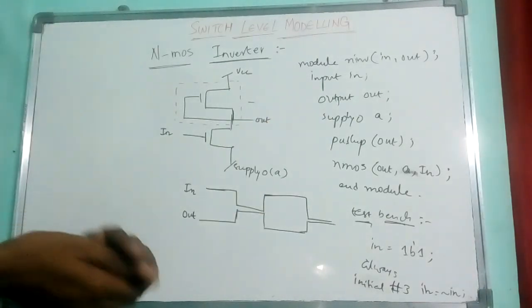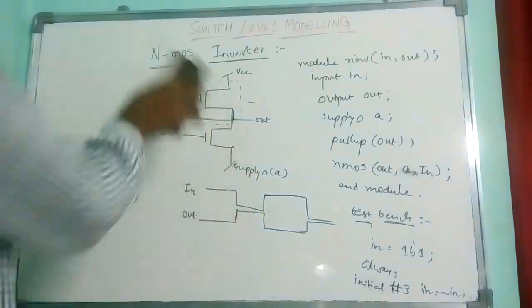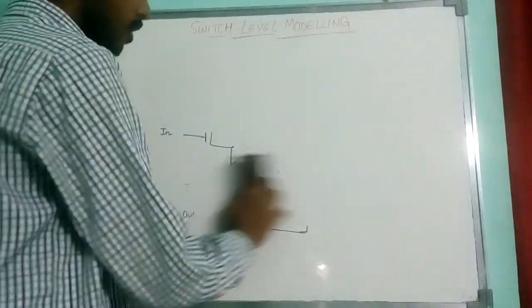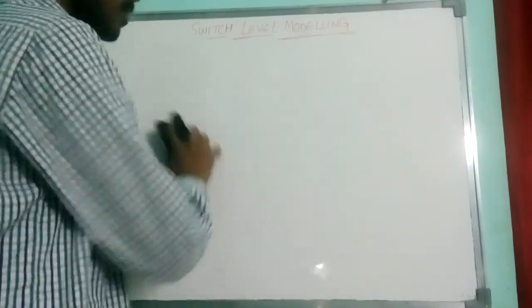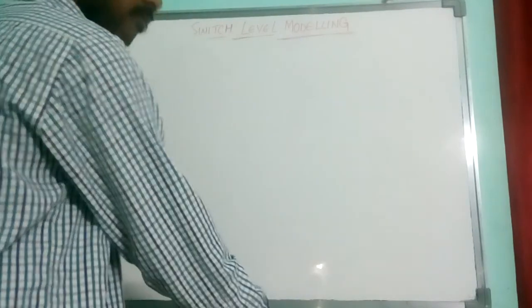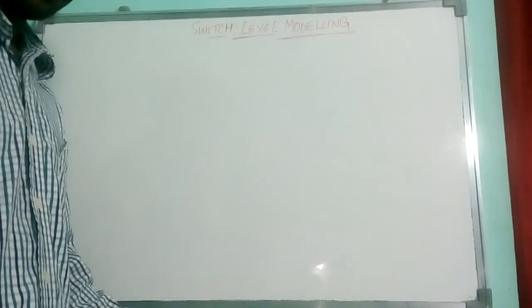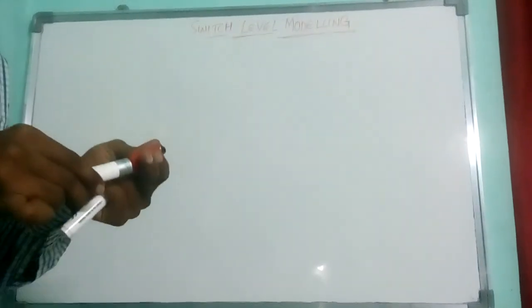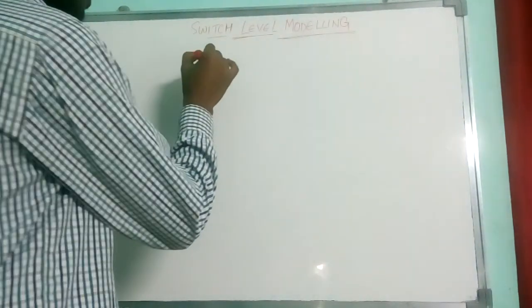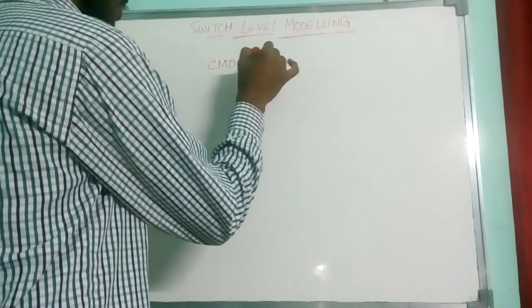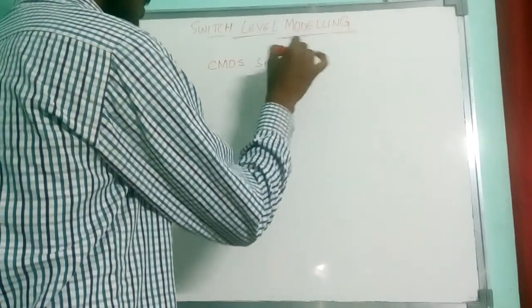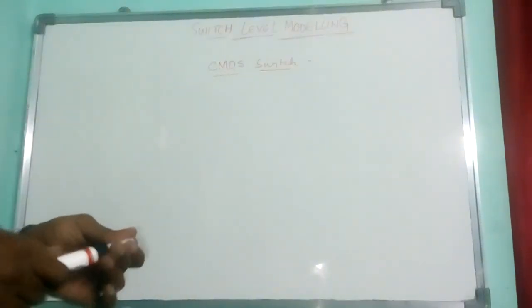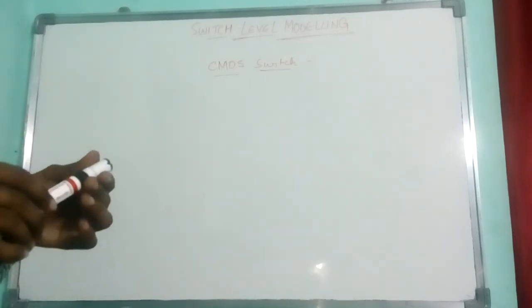We'll see CMOS switches and NMOS switches. Now even we can write the gates using this NMOS switches, but the code will be lengthy than CMOS switches. Now the next important switch is the CMOS switch. Previously we have seen PMOS and NMOS, now it is CMOS switch.